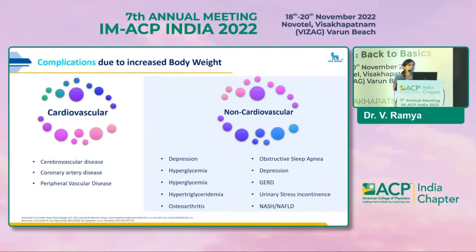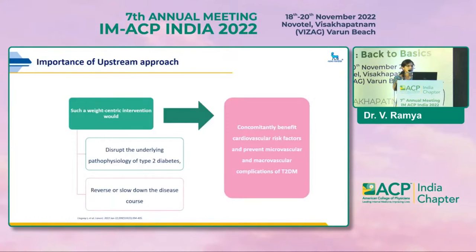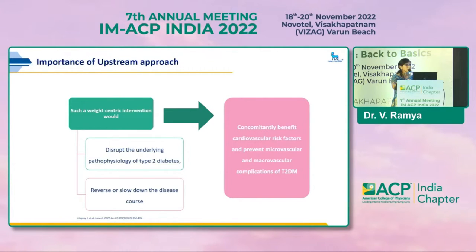We know the complications due to increased body weight — both cardiovascular and non-cardiovascular. Coming to the importance of the upstream approach: a weight-centric intervention would definitely cause type 2 diabetes individuals to go into remission, reverse the slowdown of the disease, and thereby decrease both micro and macrovascular complications. Many patients walk into our OPD with new-onset diabetes asking, 'Is our diabetes reversible? Can we go off the medicines?' There are landmark trials of diabetes prevention which clearly show that significant weight loss leads to remission.